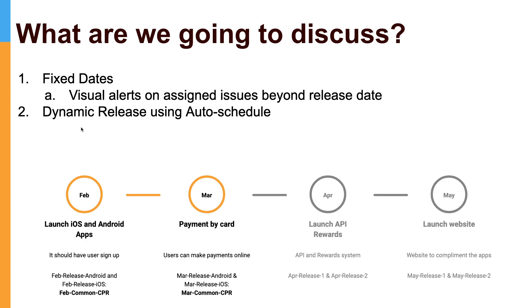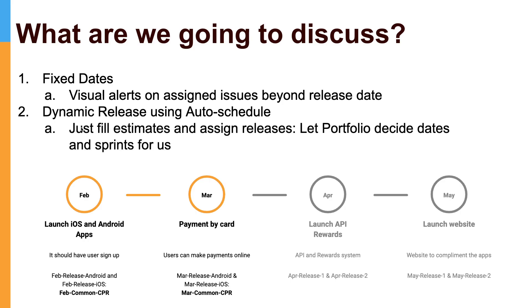I'm talking about the new improved interface where you can simply fill up the estimates and also assign the releases. Portfolio can basically decide the dates and the sprints for you. This is something you can do quite easily in Portfolio for Jira, and the advantage is that we are letting Portfolio decide for us. But even if you're doing auto scheduling, you can always take control of your plan.